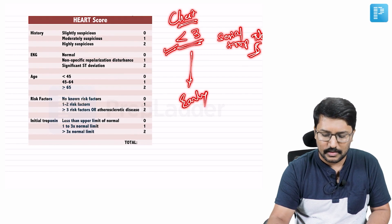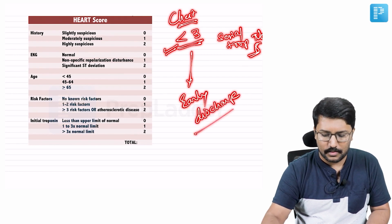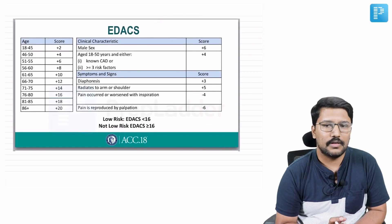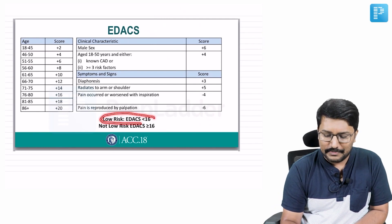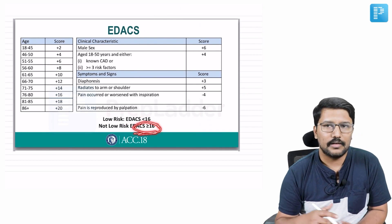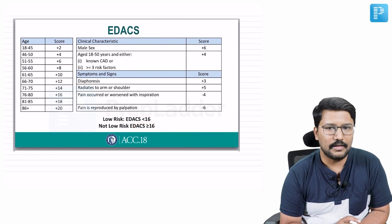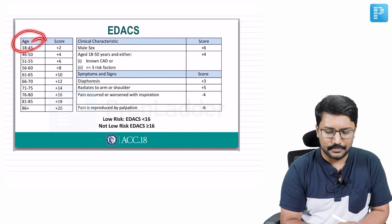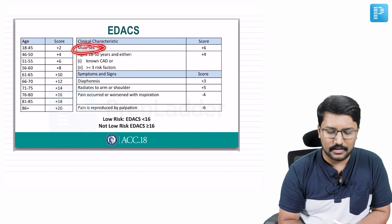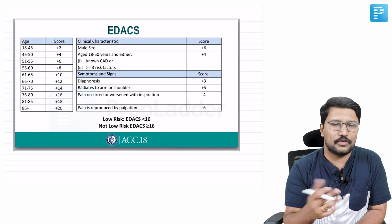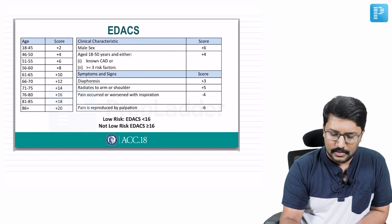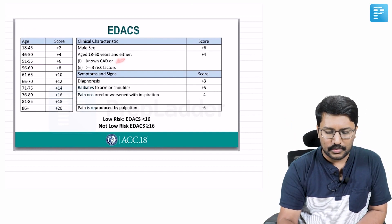On similar lines, we have another scoring system called the EDACS score. It is considered low risk if the score is less than 16, and if it is 16 or more you consider it moderate to high risk. The characteristics that go into this are the patient's age — with scores given for different age bands — and gender, since male gender carries a higher risk of atherosclerotic coronary artery disease. It also looks at history of known coronary artery disease.